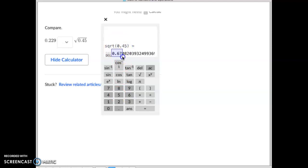This one equals about 0.67. This one is 0.229. 0.67 is bigger. So we just simply say that this one is larger.